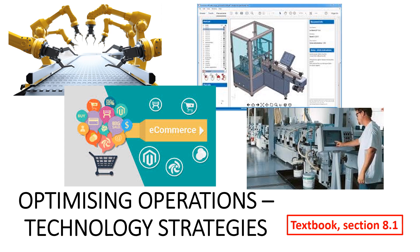There are four things that you need to do while watching this video. First, take the very best Cornell notes that you can. Second, use the pause and rewind functions — pause to take notes, rewind to review information. Third, have your vocabulary sheets open to write definitions of key terms. Fourth, have your summary books open; guidance will be given on what to include.